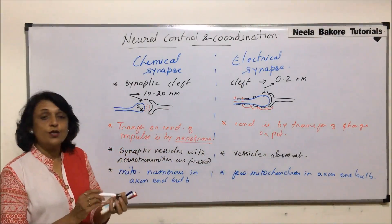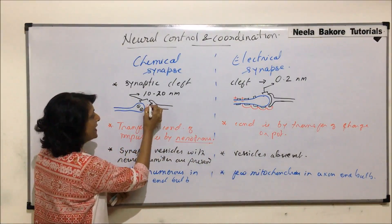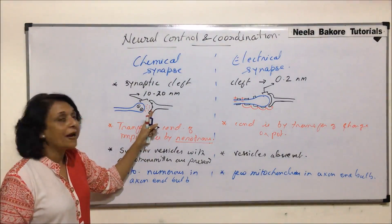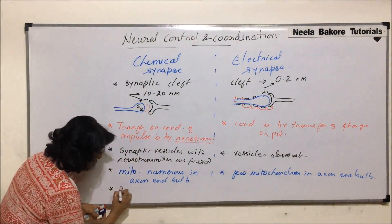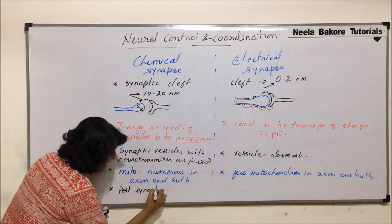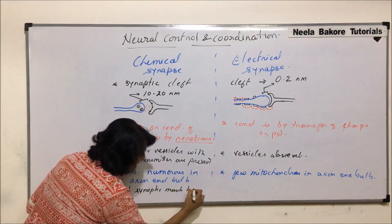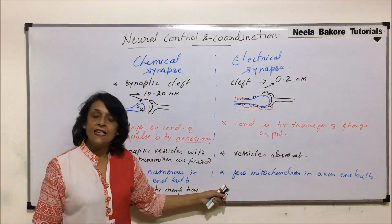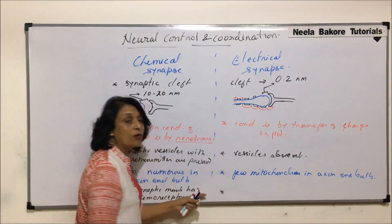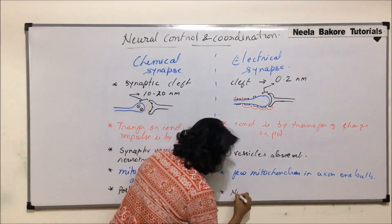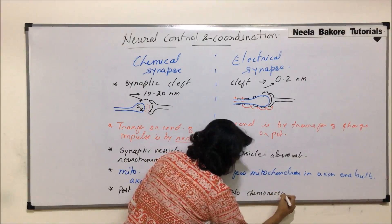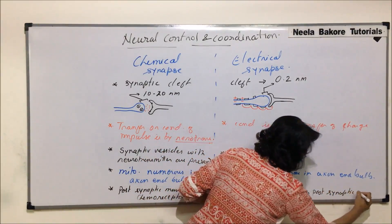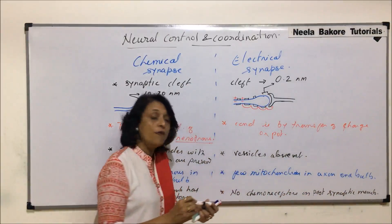In chemical synapse, the post-synaptic membrane — that is the membrane of the dendrite — has chemoreceptors, because the neurotransmitters released will bind to these chemoreceptors. In electrical synapse, since there is no chemical release, there are no chemoreceptors present on the post-synaptic membrane, which is the membrane of the dendrite.